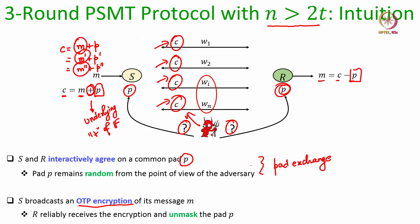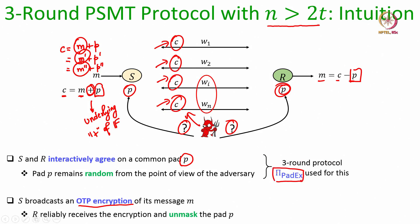That is the intuition behind this 3-round PSMT protocol. To do this pad exchange, we will use the pad exchange protocol discussed in the last lecture, which was a 3-round pad exchange protocol. But you might be wondering: if the pad exchange requires 3 rounds, then when exactly is the OTP encryption communicated — during the 4th round or 5th round?